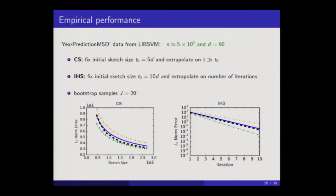Here are some numerical results. I have a matrix A that's about half a million rows and about a hundred columns, with initial sketch sizes both very small compared to half a million. The black curve is the true quantile curve for a classic sketch, and the blue curve is the average of the bootstrap estimates with fluctuations around it. In the case of IHS, the error is plotted on the log scale because it's an iterative algorithm, and the extrapolation rule used is linear because the IHS algorithm is known to have a linear rate of convergence. In either case, the average of the estimates agrees quite well with the true curve, and the number of bootstrap samples is only 20.